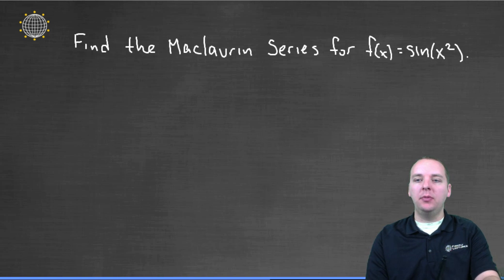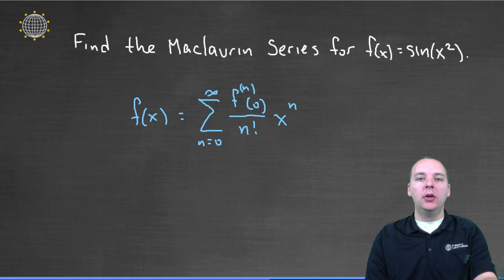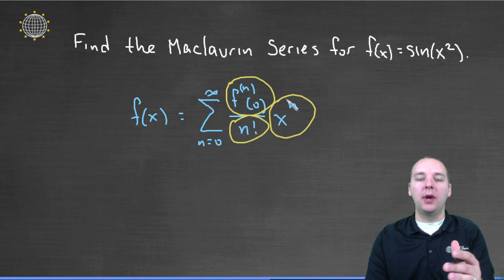The first way, if we wanted to do it by the definition of a Maclaurin series, is we could actually take a few derivatives of sin(x²), we could plug in zero, and see if we can determine a pattern here over n factorial times x to the n, and we could write it that way.